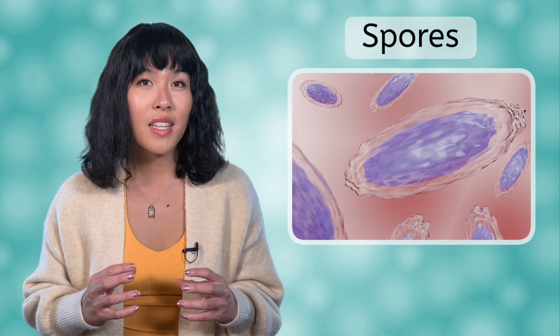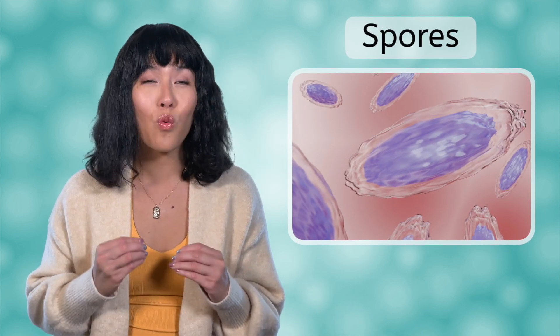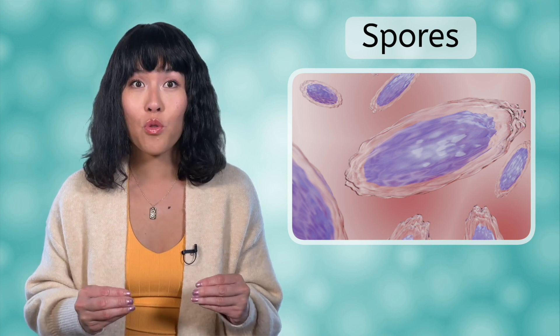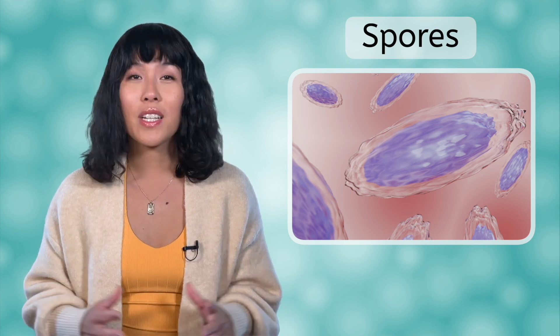In favorable conditions, bacteria can grow and multiply quickly. But what happens when conditions are more hostile or there is not enough food available? Many bacteria can form spores. They enclose themselves in a thick wall and go dormant for months or even years. When conditions improve, the wall breaks down and the bacteria can pick up right where they left off.